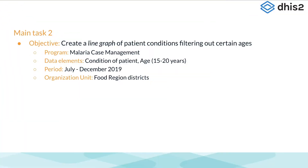We will now move on to the second task where we filter out a range of ages in an event visualization. For this task, we want to view the conditions of malaria patients who are between the ages of 15 to 20, with the time frame of July to December of 2019, by districts in the food region.